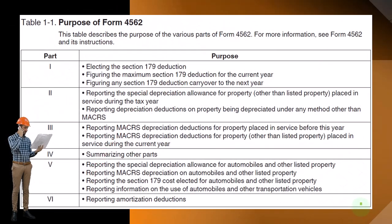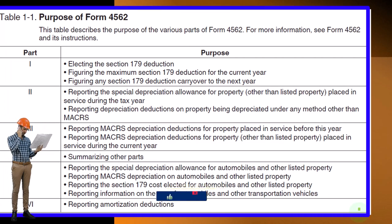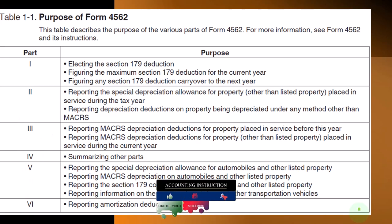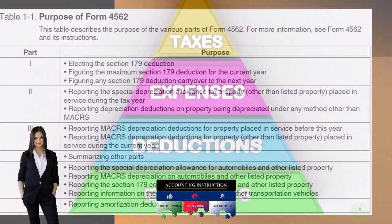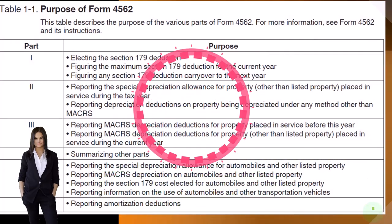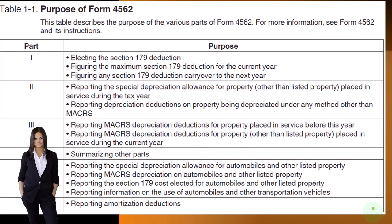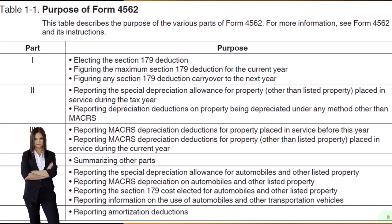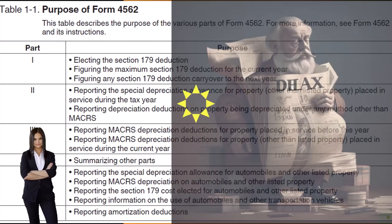Purpose of Form 4562. This table describes the purpose of the various parts of Form 4562. Part one: electing the Section 179 deduction, figuring the maximum Section 179 deduction for the current year, and figuring any Section 179 deduction carryover to the next year. Part two: reporting the special depreciation allowance for property other than listed property placed in service during the tax year, and reporting depreciation deductions on property being depreciated under any method other than MACRS.